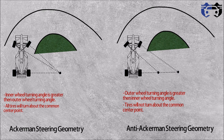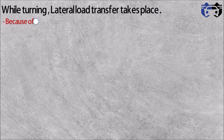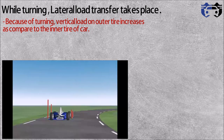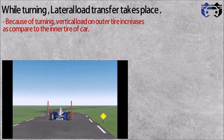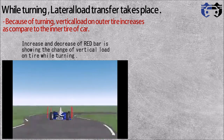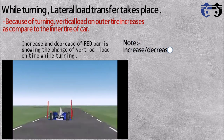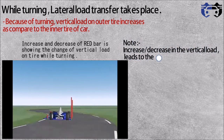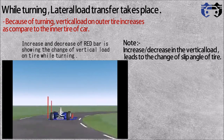Before moving further on which geometry should be used when, let's see the load transfer on a car while turning. While turning, lateral load transfer takes place. The vertical load on the outer tire increases compared to the inner tire. As the car is turning, the vertical load on the outer tire is increasing and the vertical load on the inner tire is decreasing. Note that the increase or decrease in vertical load changes the slip angle of the tire.